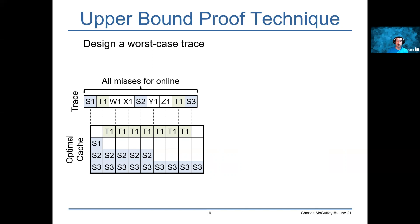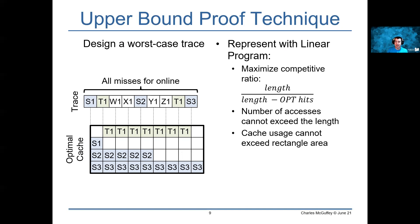Using this technique, we're going to design a linear program whose goal is to maximize the competitive ratio, which in this case is the length of the rectangle we're looking at over the length of that rectangle minus the number of hits opt is able to achieve in the rectangle, with constraints that look at both the number of accesses in the rectangle and the cache usage. These constraints are a little bit loose in order to make a feasible problem, but they still give us good results.